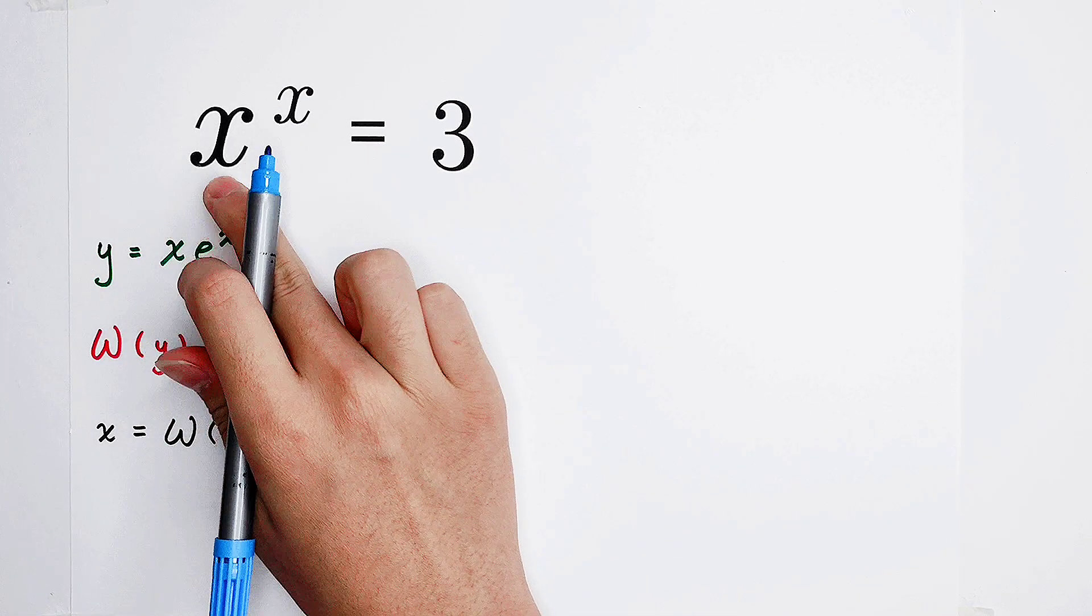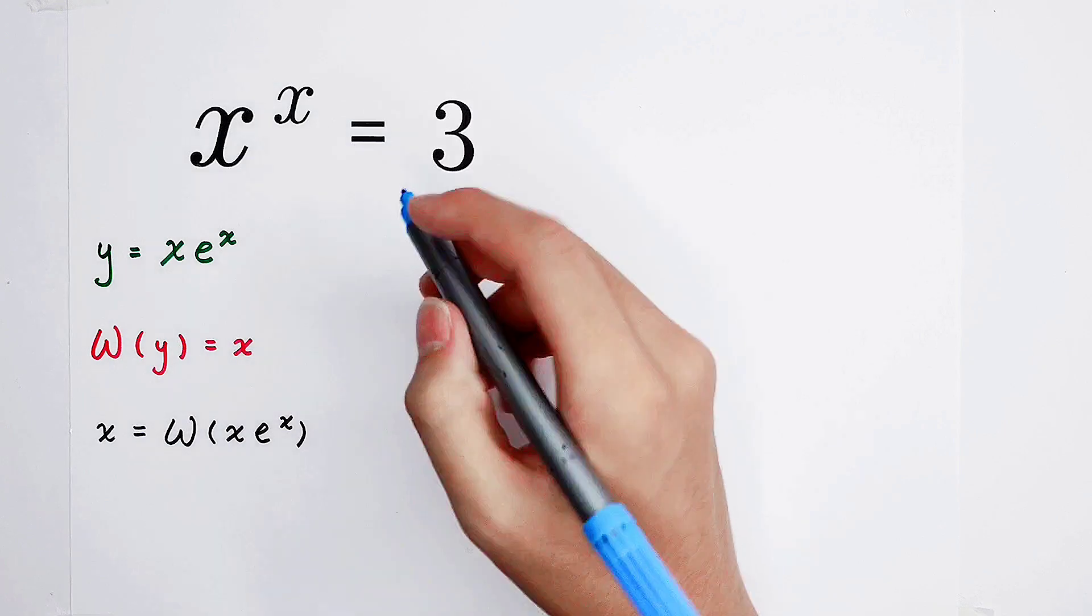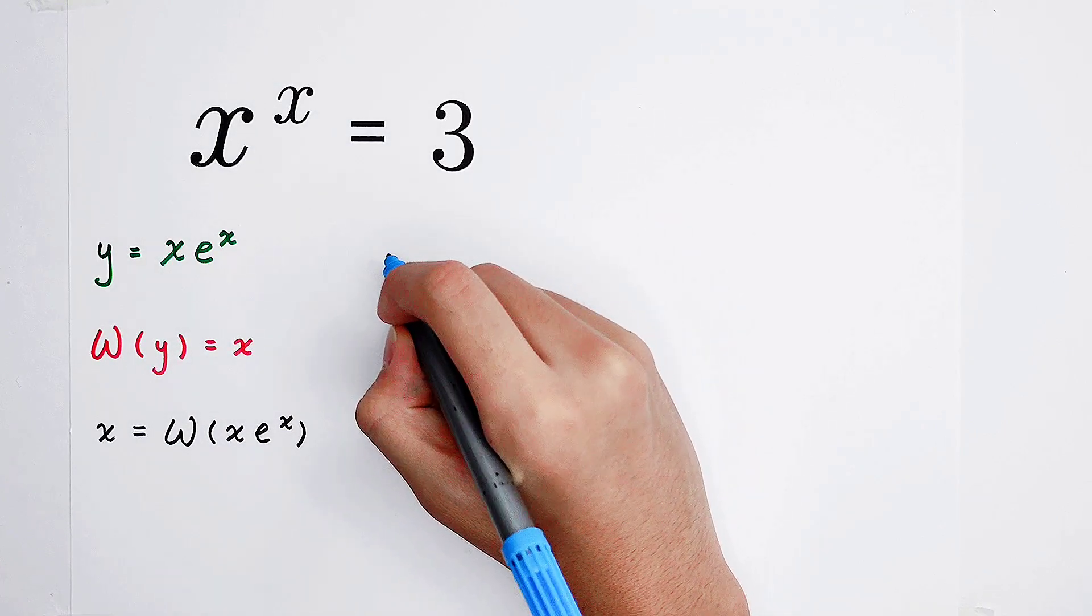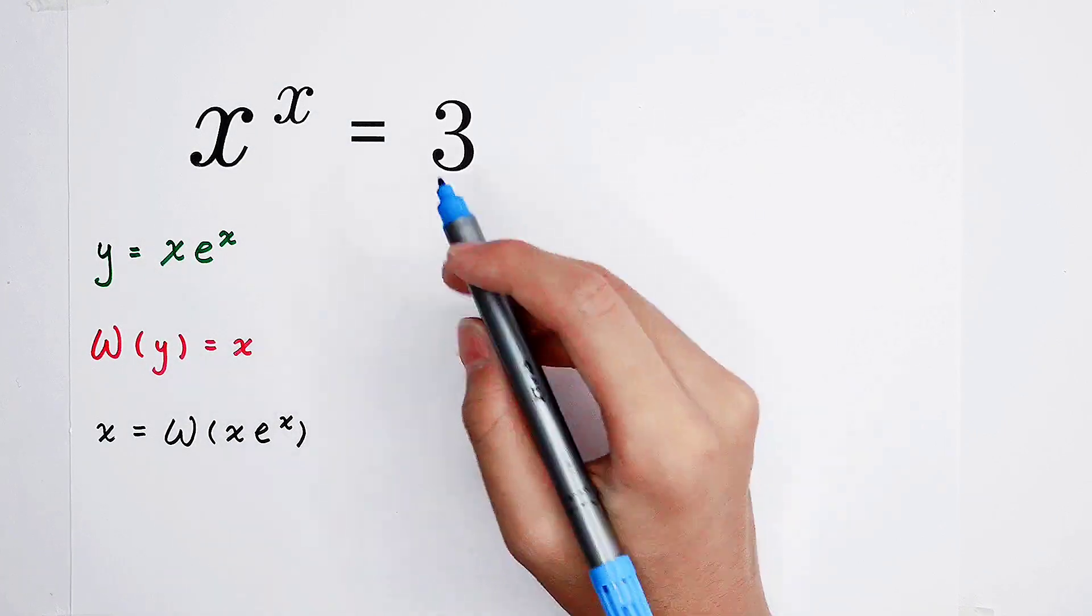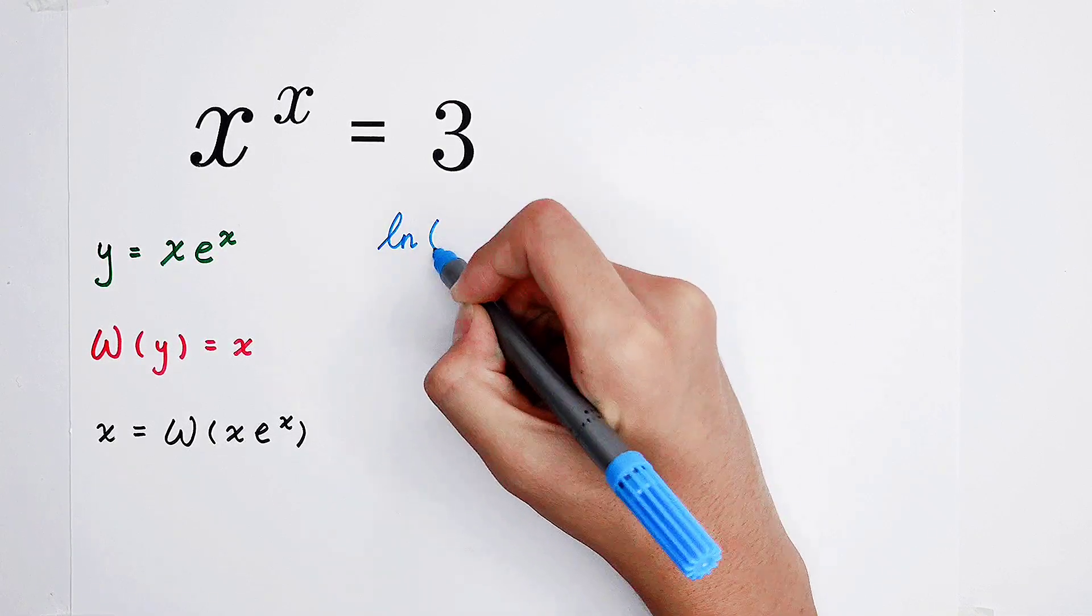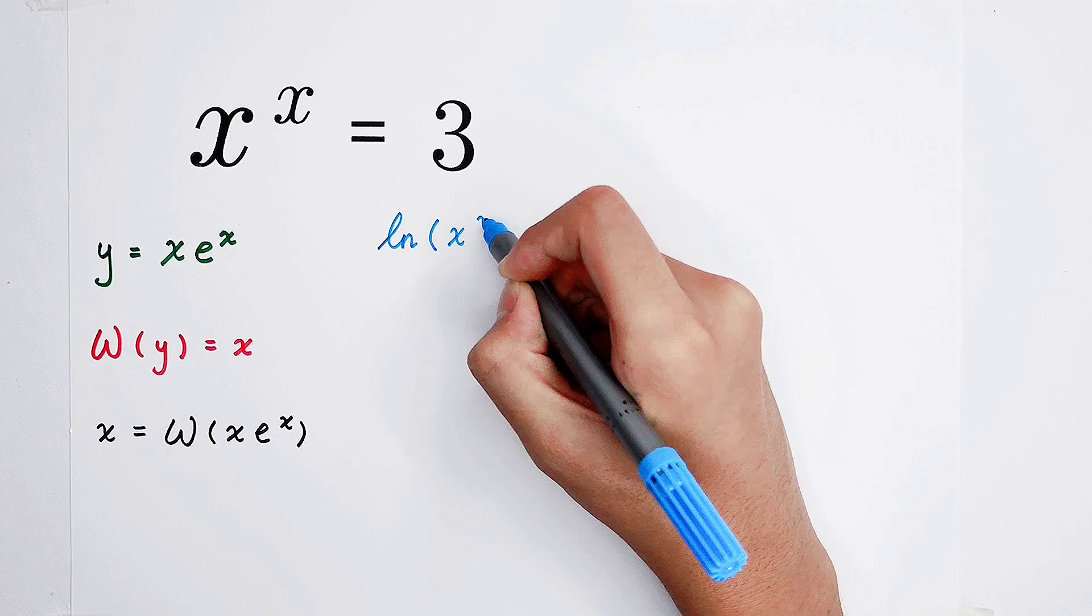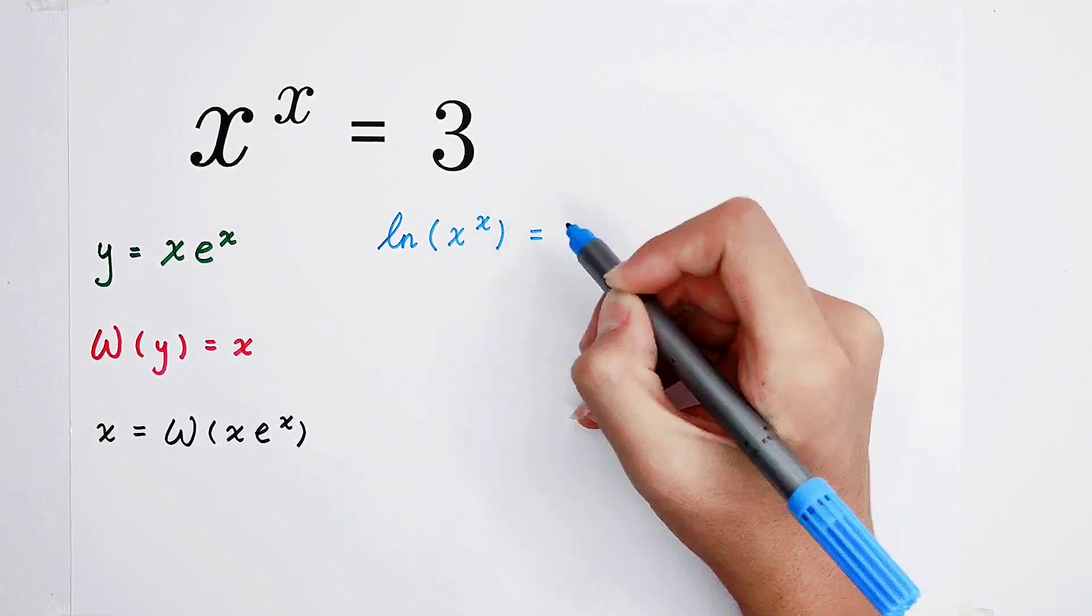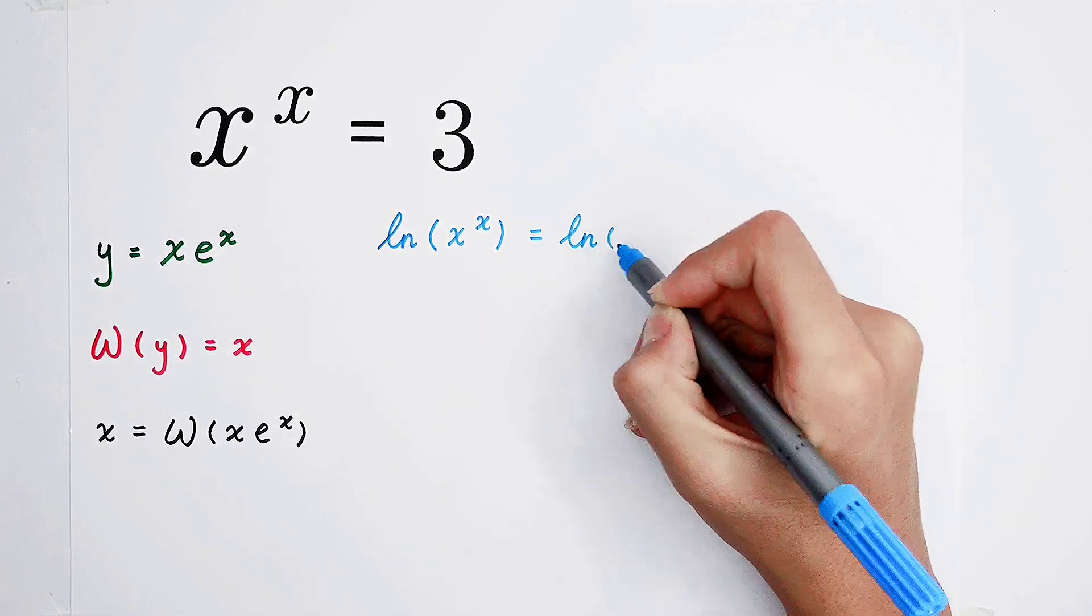Look. Firstly, exponential form, we don't like it, so logarithm. We can take a natural log on both sides. So the left side is going to be the natural log of x to the power of x, and the right hand side is the natural log of 3.